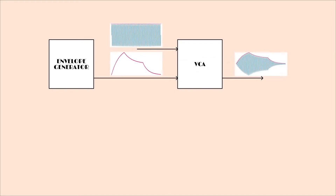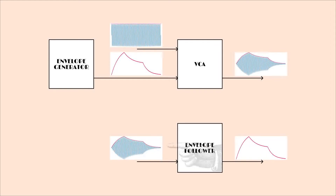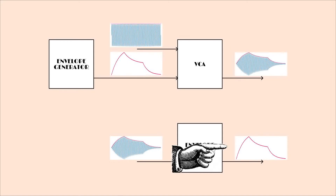An envelope follower sort of runs that backwards. With an envelope follower, you put in an audio signal that has a varying amplitude, and what you get out is a control voltage signal that reflects the loudness profile of that input signal — it starts from zero, goes to some maximum, makes its way back down to zero, whatever reflects the loudness of the input. You can then use this envelope the same way you'd use one from an envelope generator to control a VCA, an oscillator, a filter, or whatever. In principle, if you took the output of a VCA and put it into an envelope follower, you'd get back the envelope you put into the VCA in the first place — which would be kind of a dumb thing to do since you've already got that envelope signal.